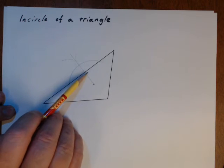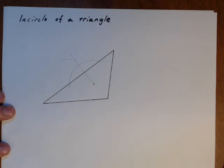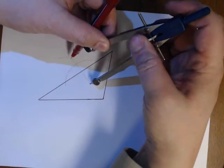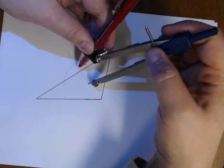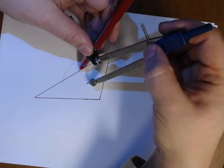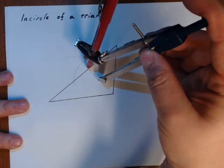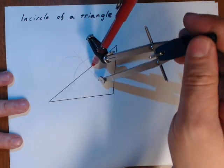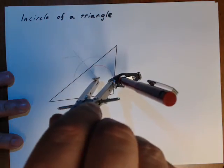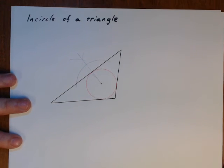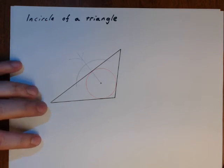So, there's a right angle. And using that point, I can find my radius. And there is my incircle.